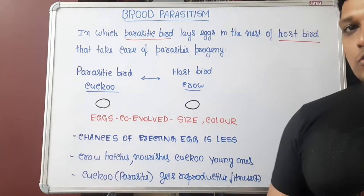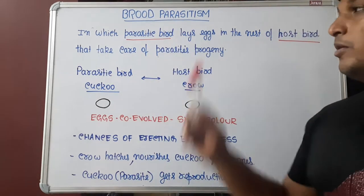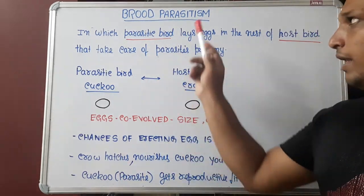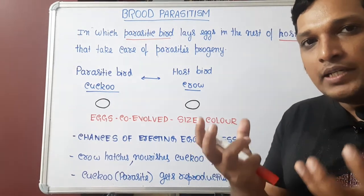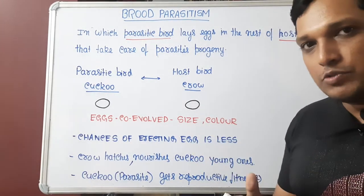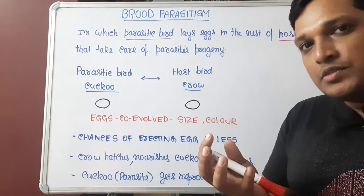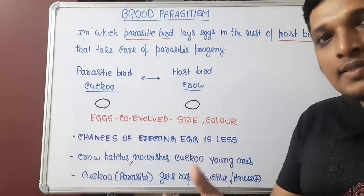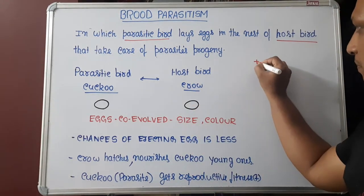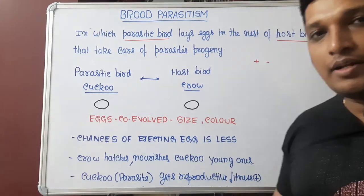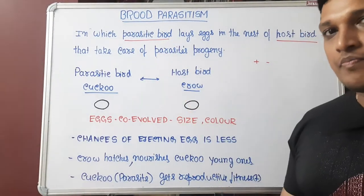Hello, good morning everyone. Today we are going to understand one type of parasitism known as brood parasitism. What exactly is parasitism? It is an interaction between two populations or individuals where during the interaction one is benefited and another one is harmed — we can indicate it as a plus-minus kind of interaction.